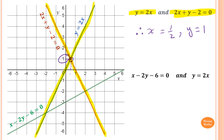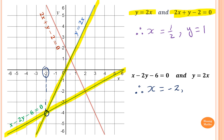Find the point of intersection between x - 2y - 6 = 0 and y = 2x. Please stop the video and do this one yourself. x - 2y - 6 = 0 is this line here, and y = 2x is this line here. The point of intersection is here. The x value is negative 2, so x = -2. Looking across horizontally, y = -4. Therefore, x = -2 and y = -4.